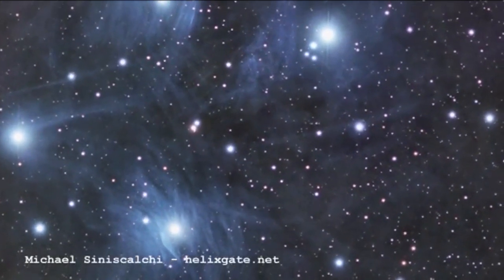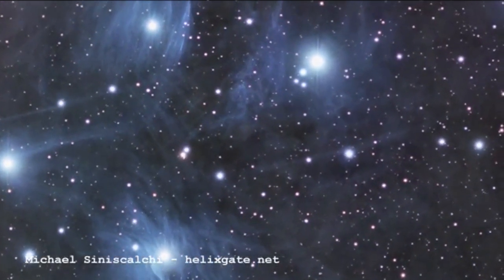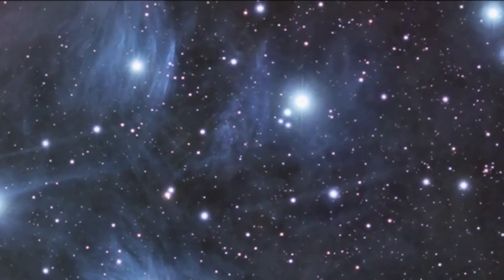M34 is part of a larger collection of objects known as the Local Association, which consists of several different star clusters, including M45, another Messier object, which is very well known, the Pleiades. And observations have shown that many of these structures have the same velocities and at the moment, at least, are travelling through space in a loose association somewhat together.